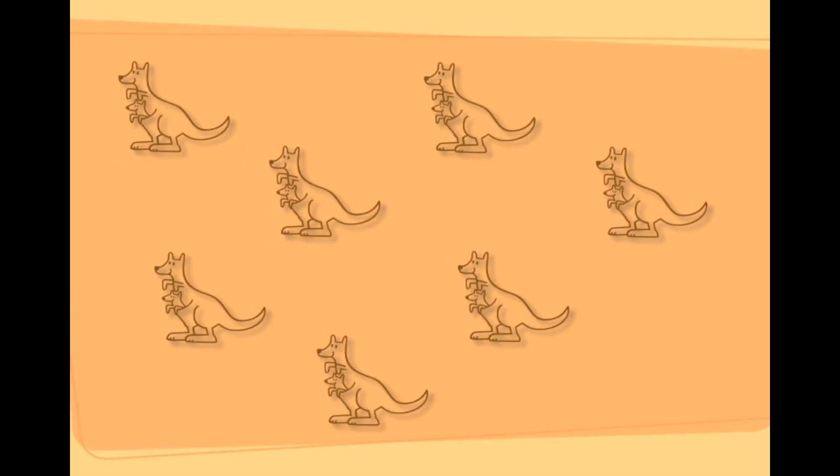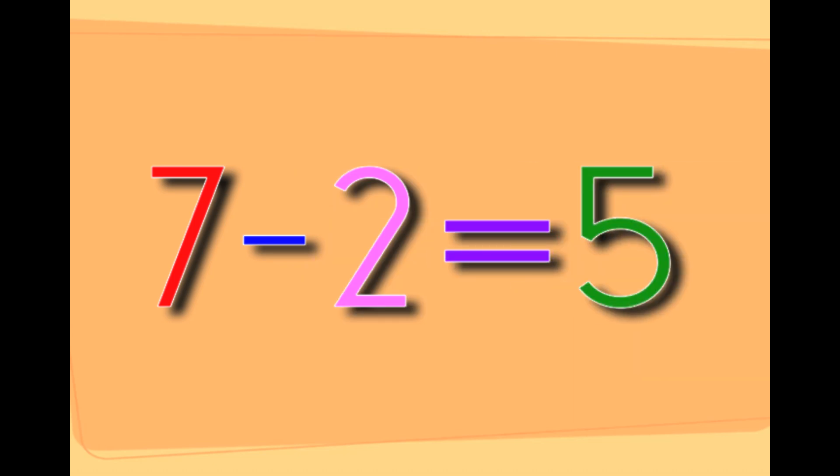This is seven kangaroos. If you take two kangaroos away from the seven kangaroos, it leaves you with five kangaroos. That's seven minus two equals five.